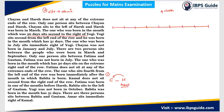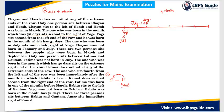Continuing with the clues: the person born in July sits immediately to the right of Yogi, so position 3 is assigned to July. Chayan was not born in January or July. There are two persons sitting between the person born in March and the person born in September. Since Harsh is born in March, we know March's position and can determine September is two positions away in one direction.